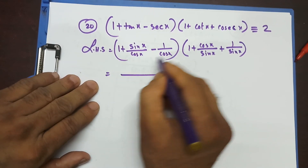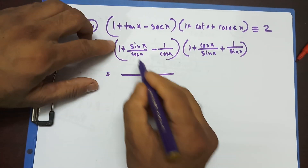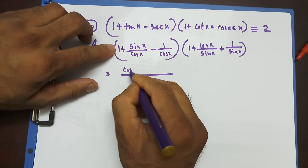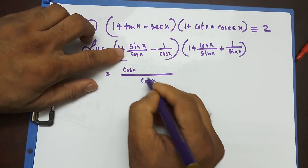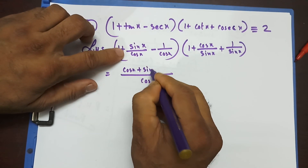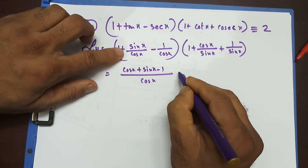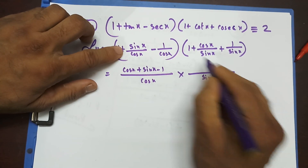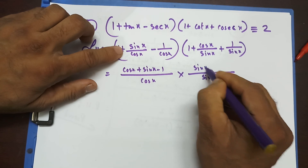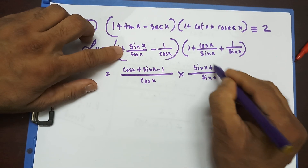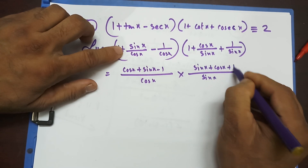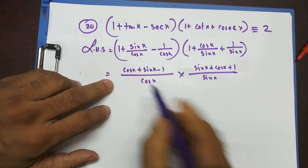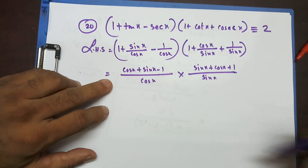If I do the LCM, over here is cosx. There is nothing underneath so it's going to be cosx, and that's cosx plus sinx, and that's going to be minus 1. This thing is going to be sinx, and over here is sinx plus cosx plus 1. Now, this looks really nasty.